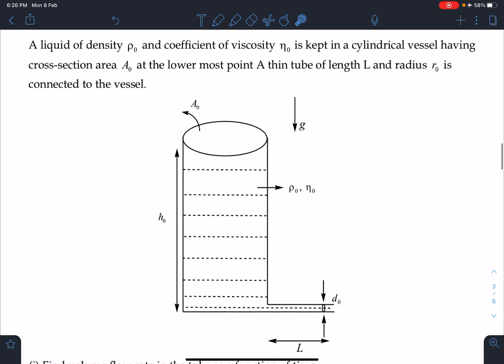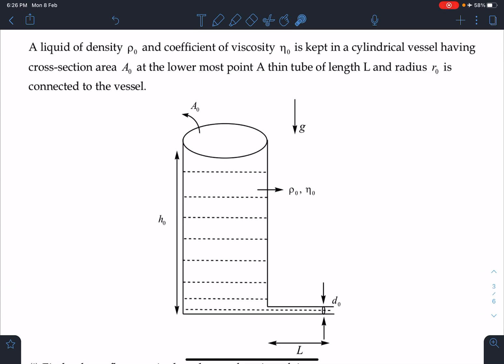Here is the statement of this problem. It's an original problem, slightly modified from the existing one. A liquid of density ρ₀ and coefficient of viscosity η₀ is kept in a cylindrical vessel having cross-sectional area A₀. At the lowermost point, a thin tube of length L and radius r₀ is connected to the vessel.